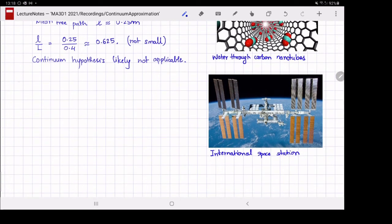Let's move on to the next example. The second example is that of the International Space Station. The International Space Station orbits the Earth approximately 400 kilometers above mean sea level.